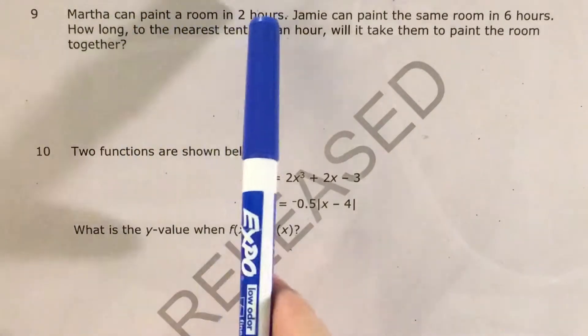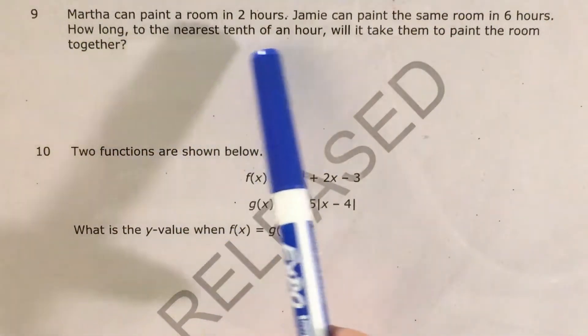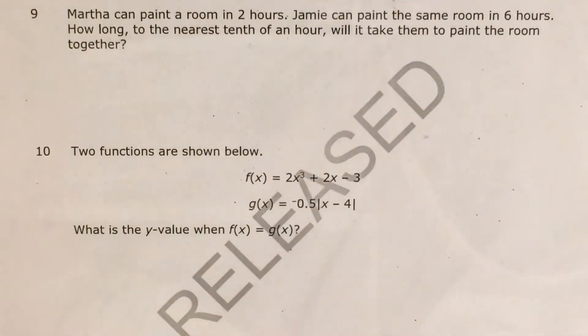The question tells us that Martha can paint a room in two hours and Jamie can paint the same room in six hours, so we're trying to figure out how long to the nearest tenth of an hour it's gonna take them to paint the room together.